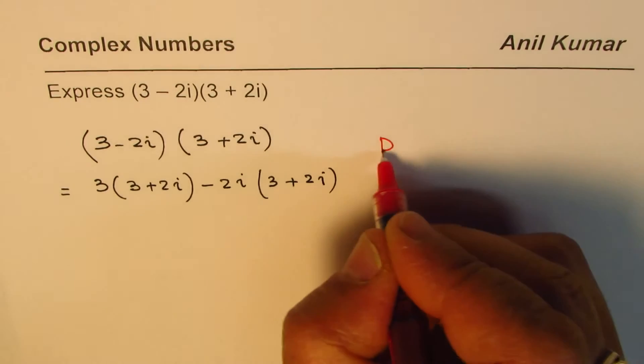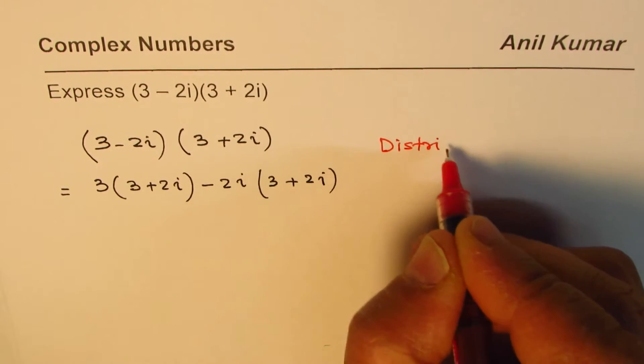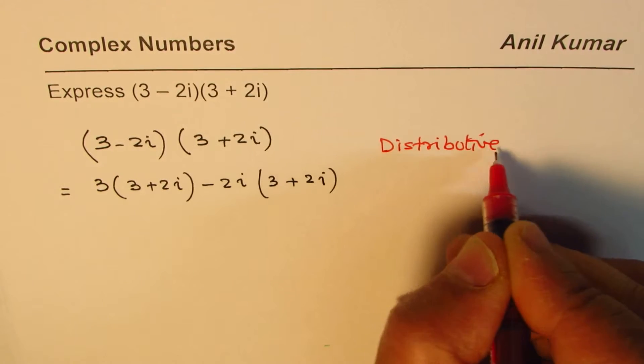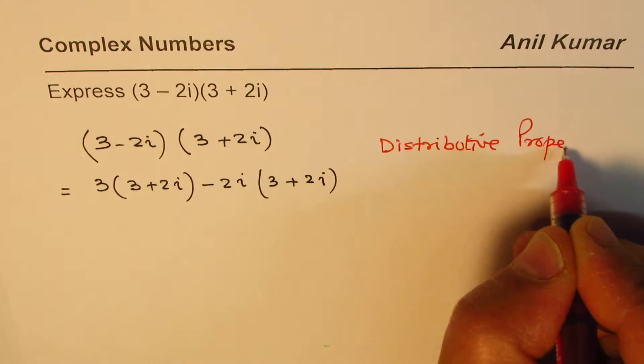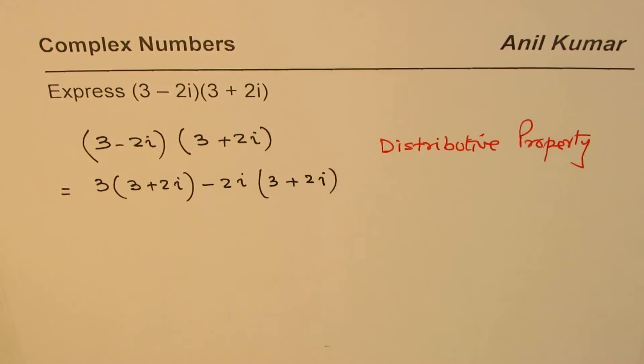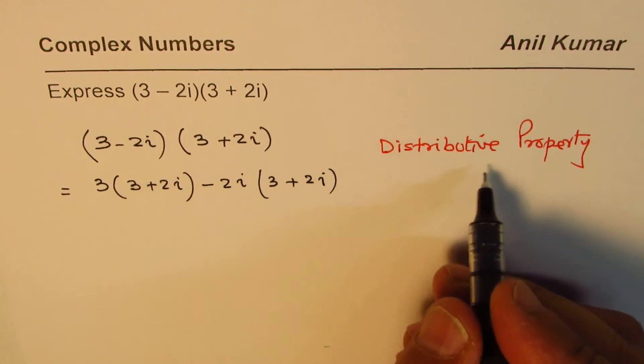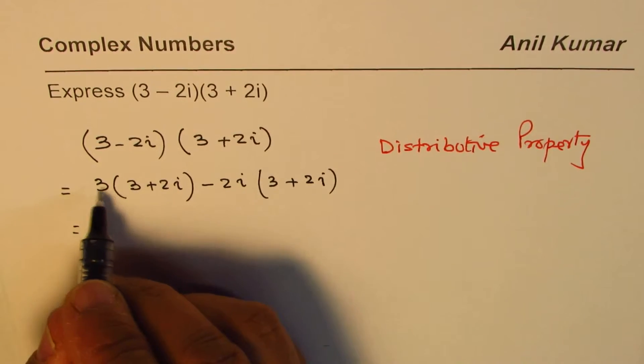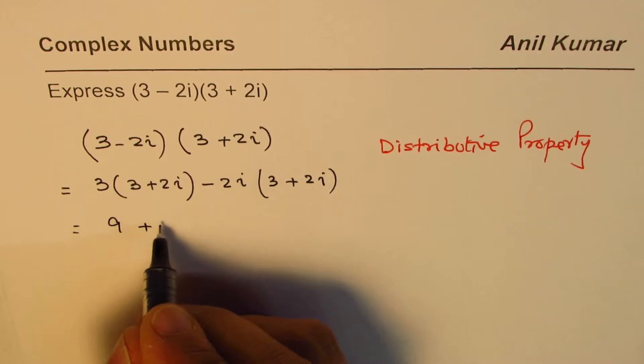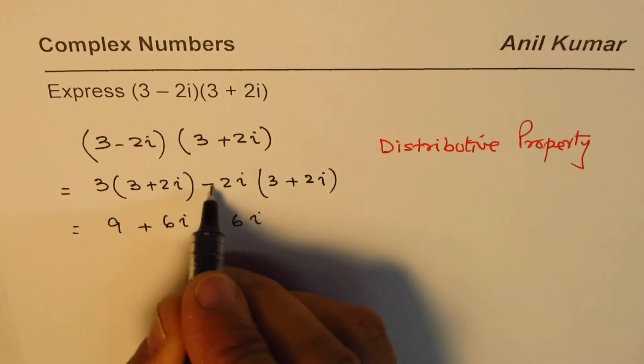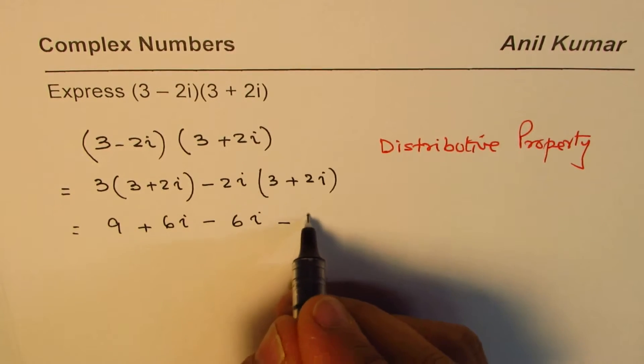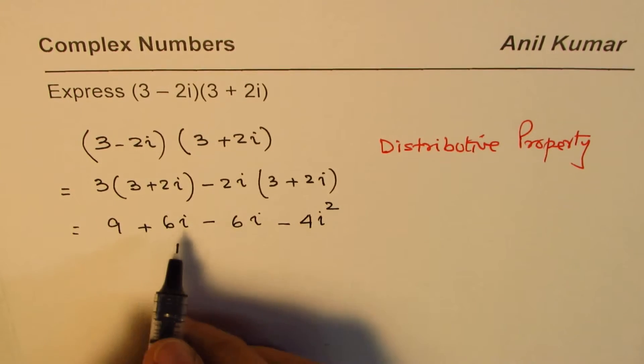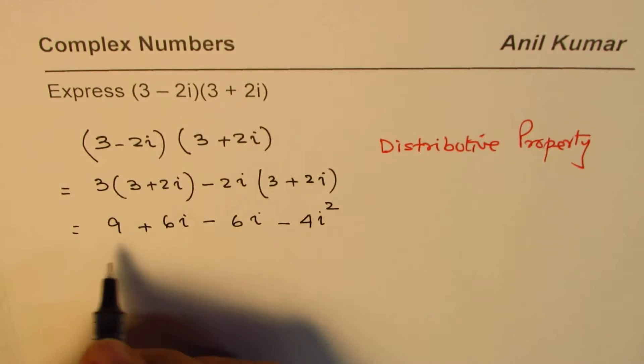So 3 times 3 is 9 plus 6i, minus 6i, and that gives you minus 4i squared. Now plus 6i minus 6i is 0.